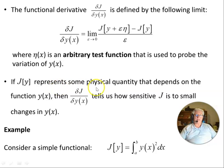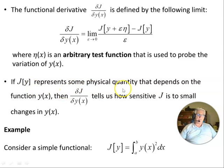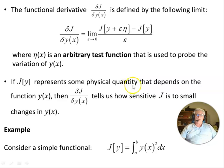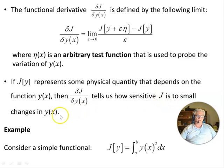Intuitively, if J[y] represents some physical quantity — like in general relativity the action S — something about the physical system that depends on the function y(x), then δJ/δy(x) tells us how sensitive J is to small changes in y(x). So let's give an example.